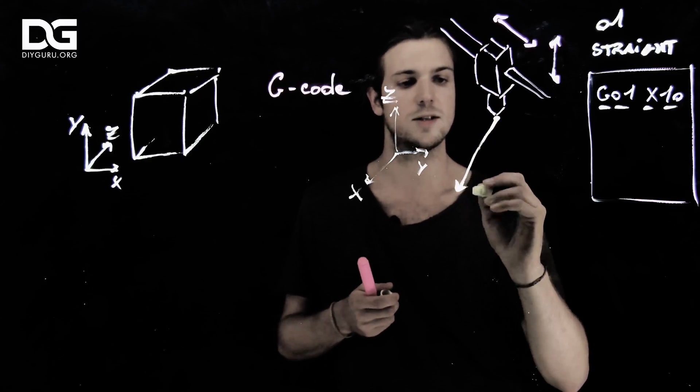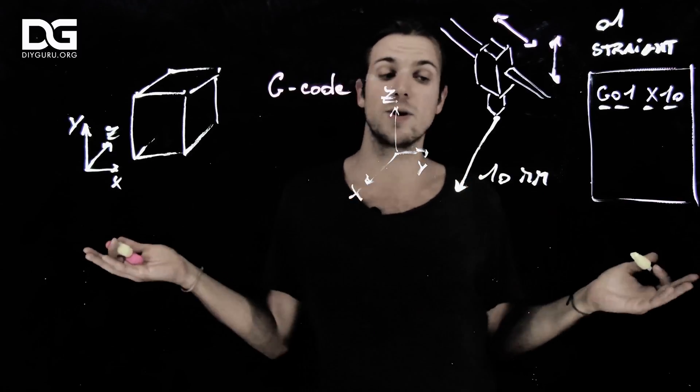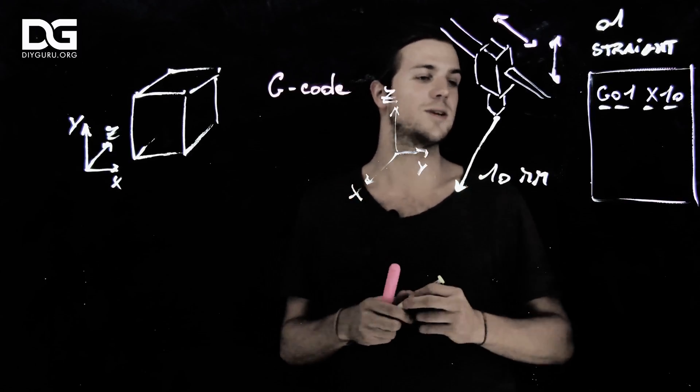So basically, my print head is just going to go like this from 10 mm. If you're from the US, it might be 10 inches, but it's the same concept, of course.